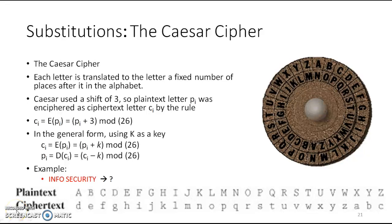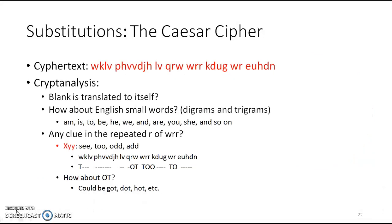This is lecture number seven, the extension for the previous lecture, module number two: Information System Security, MIS 470. We were discussing about the substitution ciphers — the Caesar cipher. Now there is an example to solve to clarify it more. The example ciphertext given is like WK LV pH, and so on up to EU HDM.